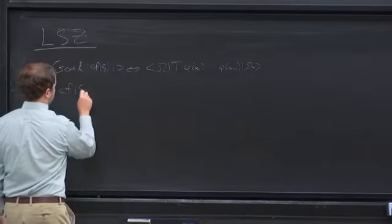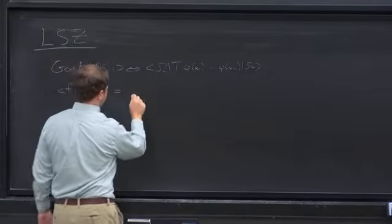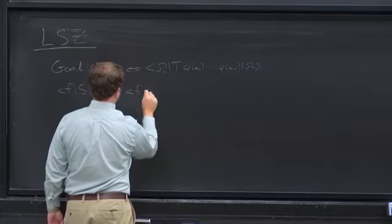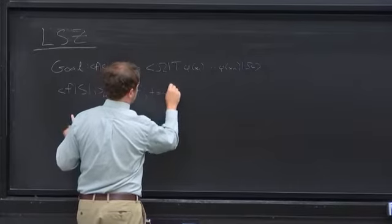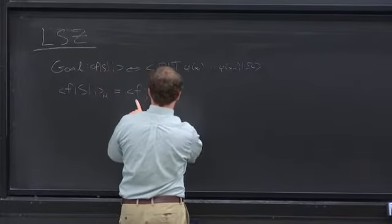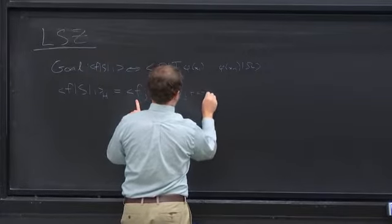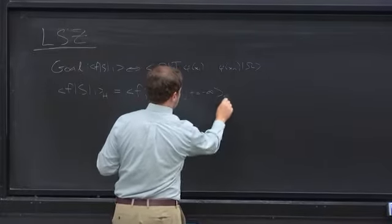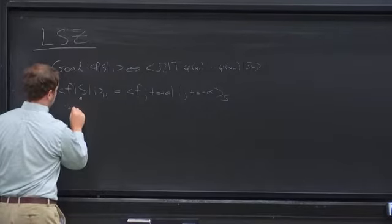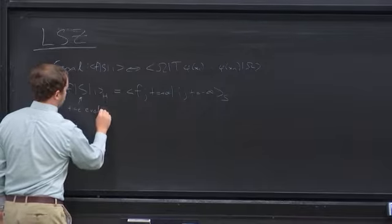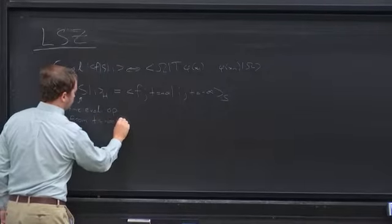In order to do that, let me say a few more words about what F|S|I means. This is our Heisenberg picture expression. You can also write this in the Schrödinger picture as a final state at t = +infinity overlapping with some initial state at t = -infinity, where S is the time evolution operator from t = -infinity to t = +infinity.